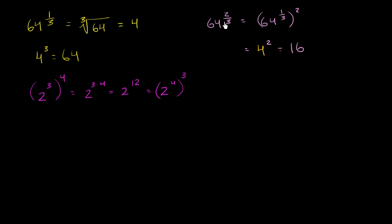We already know what 64 to the 1/3 power is — we just calculated that it's equal to 4. So this is equal to 4 squared, which is equal to 16. So 64 to the 2/3 power is equal to 16. The way I think of it: find the cube root of 64, which is 4, and then square it to get 16.